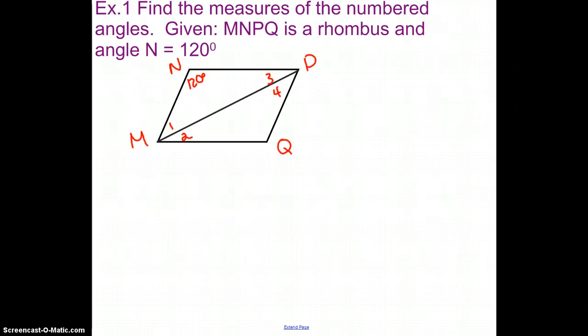So this one says find the given measures of the numbered angles given that MNPQ is a rhombus, and that angle N is 120. So first of all, really what they want us to be able to do in this one is they want us to be able to tell what all the numbered angles are.